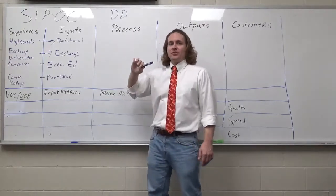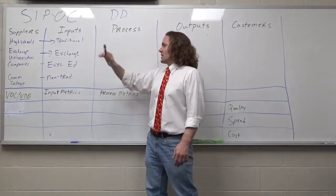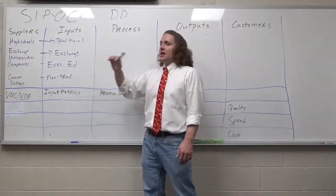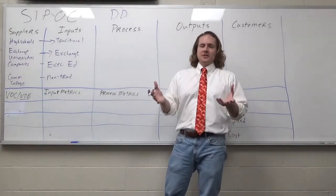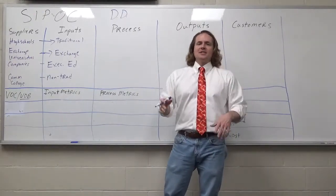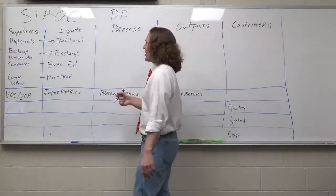You'd have one process map for traditional students, one for exchange students, one for executive ed students, and one for non-traditional students. But for just purposes of illustration, we're going to assume that the process is pretty much the same for all four groups.